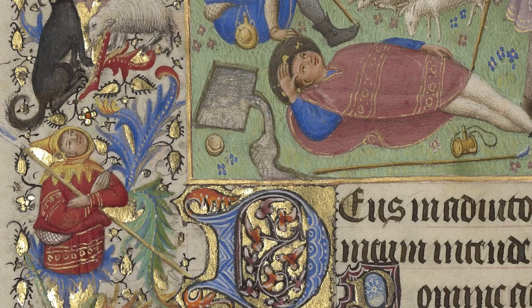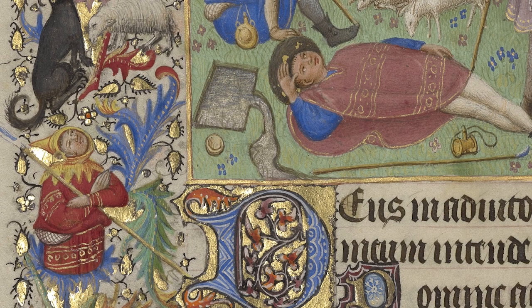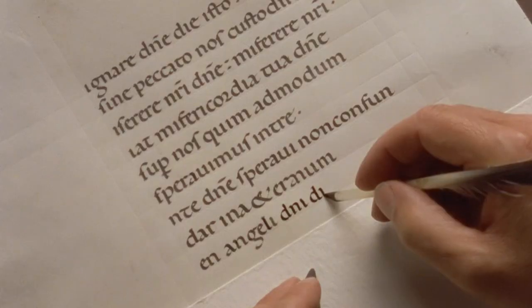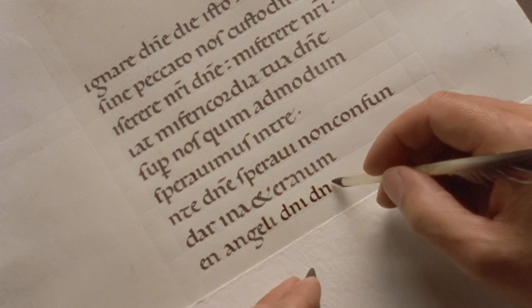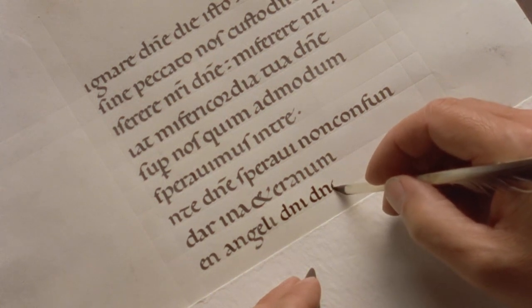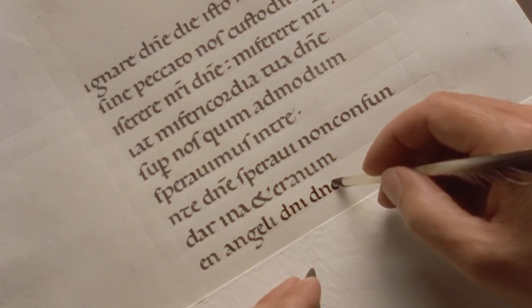The vibrant illuminations in a medieval manuscript often overshadow the words on the page, yet the writing of the script was as important as the painting of the images. The tools of a scribe, the person who copied the text onto the page, were simple.